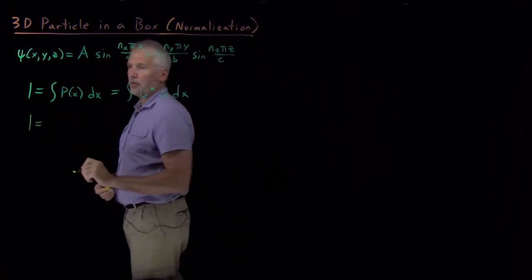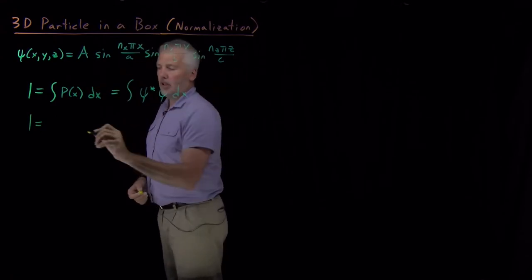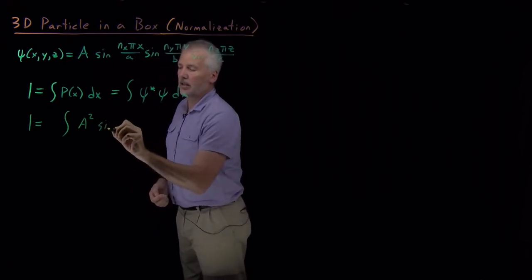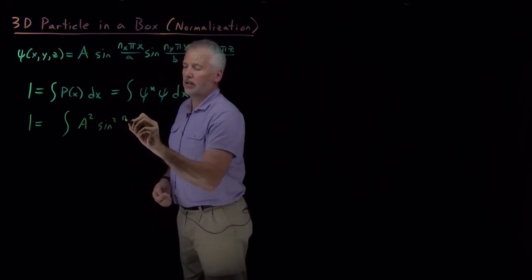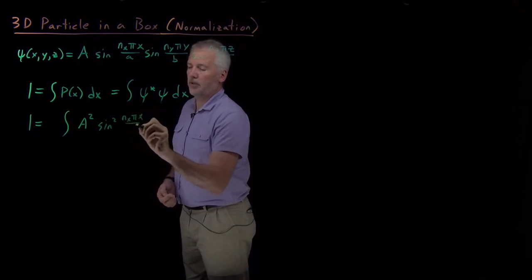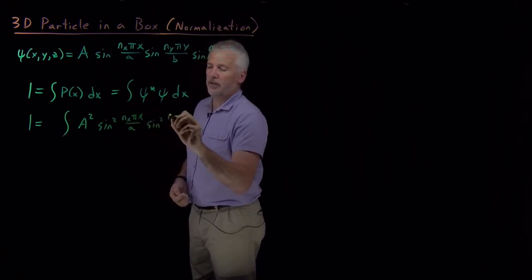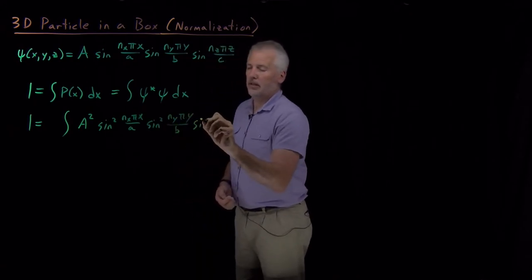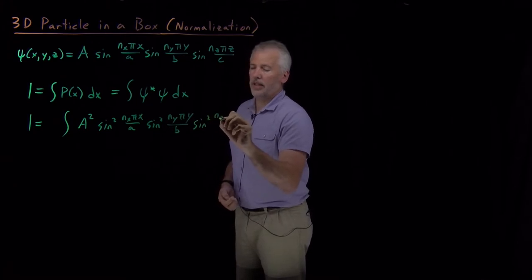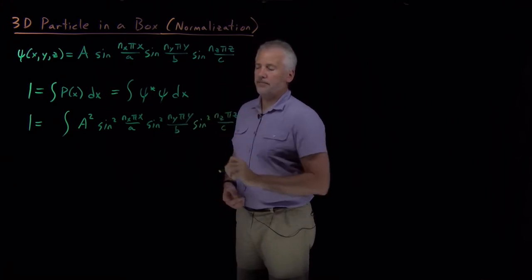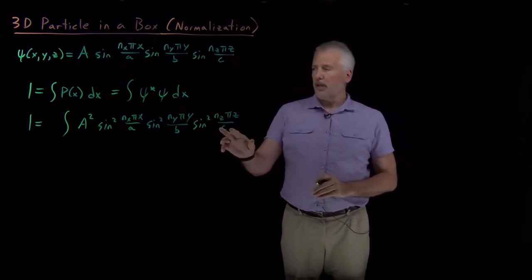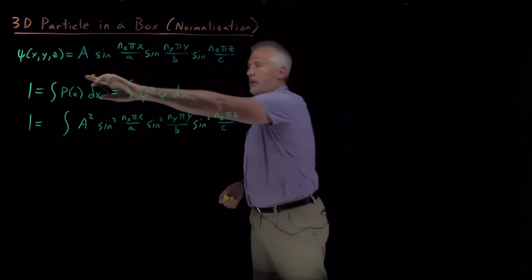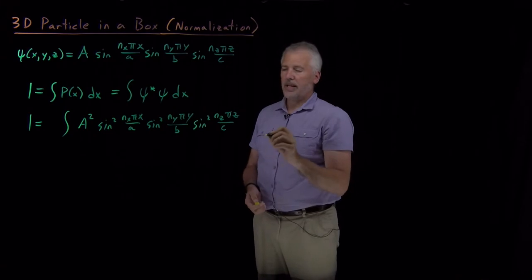Writing down what that integral is equal to — the wave function is this long thing. If I square it, I'm going to get A squared times sine squared of n₁πx/a, times sine squared of n₂πy/b, times sine squared of n₃πz/c. I need to ask myself what I'm integrating with respect to. I'm not just integrating with respect to x, because I have a three-dimensional function, so I have x, y, and z.